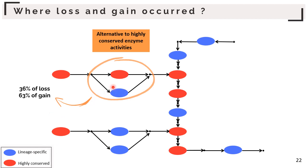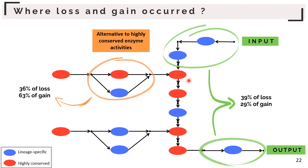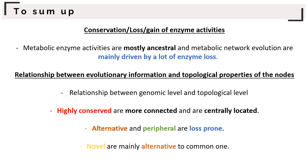Most enzyme activity loss and gain involves activities that are alternative to a highly conserved enzyme activity — 36% and 63% respectively — or enzyme activities located at the input or output of the metabolic pathway — 39% and 29% respectively. To summarize: metabolic enzyme activities are mostly ancestral, and metabolic network evolution is mainly driven by enzyme loss. Highly conserved enzyme activities are more connected and centrally located, while alternative and peripheral enzyme activities are loss-prone, and novel enzyme activities are mainly alternative to common ones.